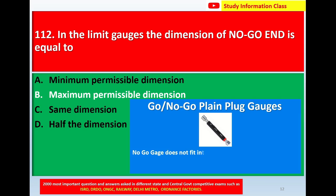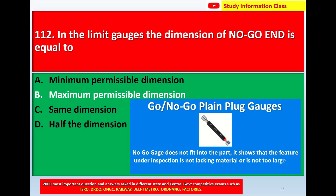The no-go gauge does not fit into the part; it shows that the feature under inspection is not lacking material and is used to check that dimensions are not too large and consequently too loose. So for question number 112, in the limit gauges the dimension of the no-go gauge is equal to the correct answer, Option B, maximum permissible dimensions.